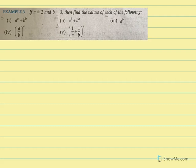If A equals 2 and B equals 3, then find the value of each of the following. For the first one, it is A raised to A plus B raised to B.